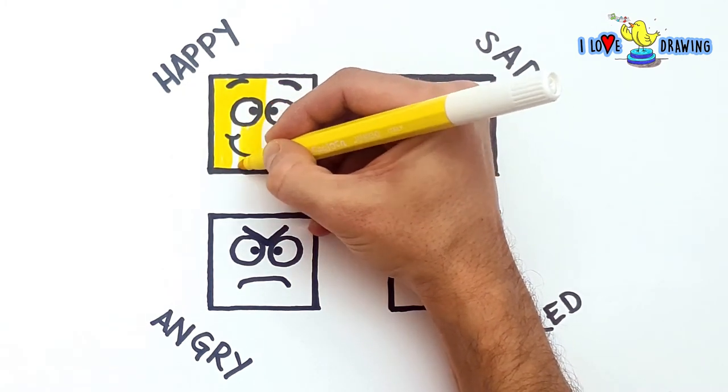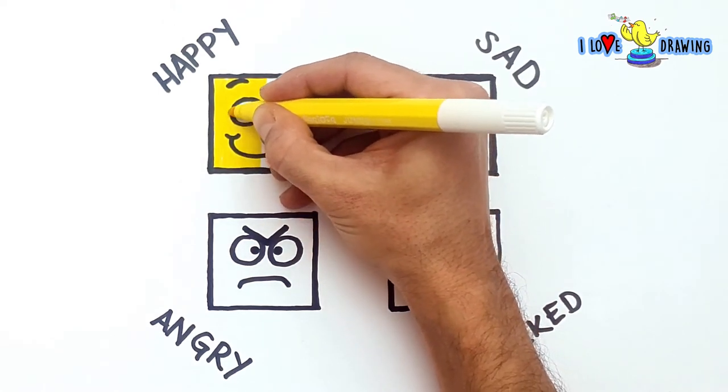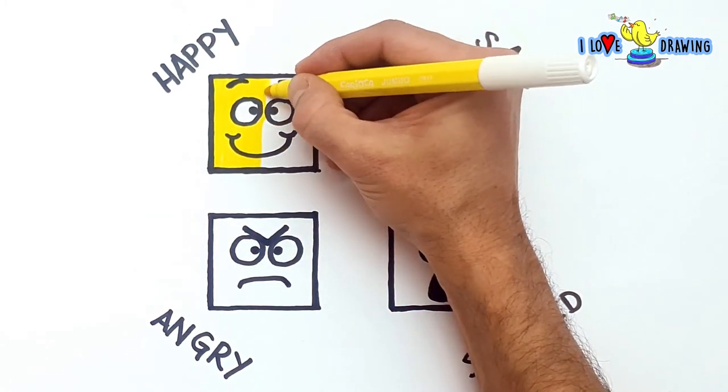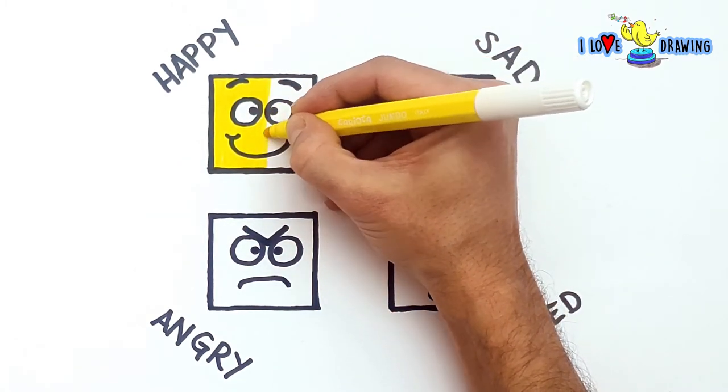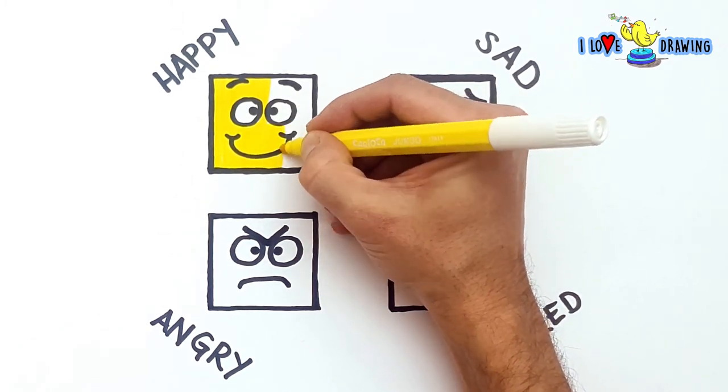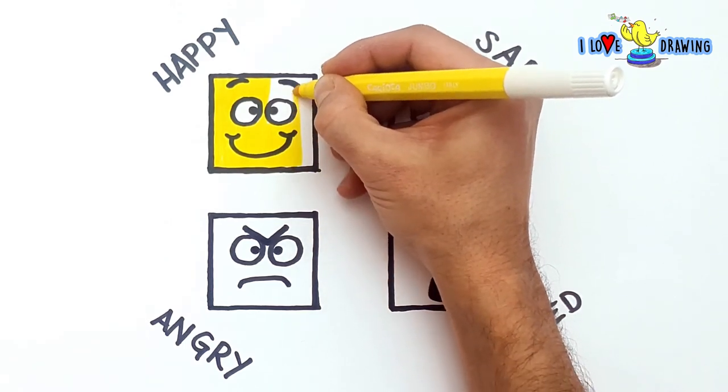I'm using a yabba daba yellow for the happy face. I'll be coloring my sad face with the best blue. Because it's kind of feeling blue. Then I'm going to use a really hot red for the angry face. And for my last expression, for the shocked square, I'm going to be using a great green.